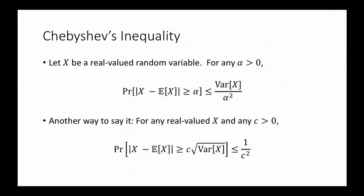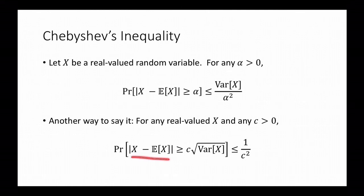Next, we come to Chebyshev's inequality. Chebyshev's inequality can be useful for any random variable x, not necessarily non-negative, as long as x has finite variance. Chebyshev's inequality says: let x be a real-valued random variable. Then for any alpha greater than or equal to 0, the probability that x deviates from its expectation by more than alpha is at most the variance of x divided by alpha squared. Another way to say this is: for any real-valued x and any c greater than 0, the probability that the deviation of x from its expectation is greater than c times the square root of the variance of x is at most 1 divided by c squared.